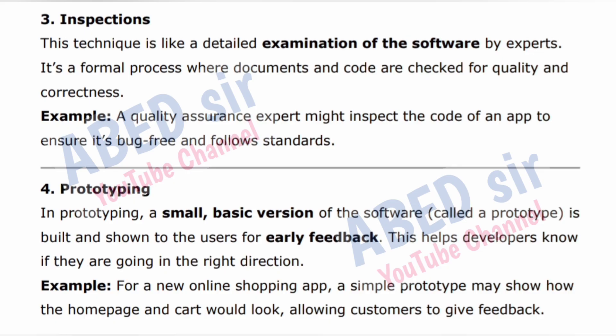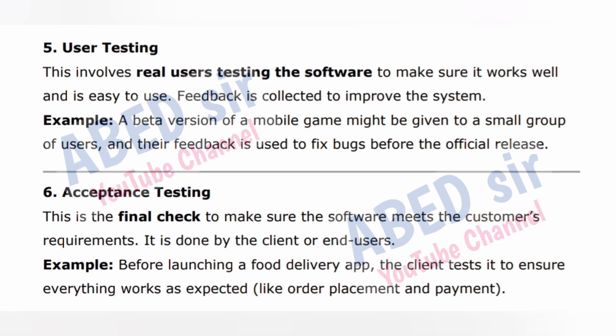Technique 4 — Prototyping: in prototyping, a small, basic version of the software called a prototype is built and shown to the users for early feedback. This helps developers know if they are going in the right direction. Example: for a new online shopping app, a simple prototype may show how the homepage and cart would look, allowing customers to give feedback. Technique 5 — User Testing: this involves real users testing the software to make sure it works well and is easy to use. Feedback is collected to improve the system. Example: a beta version of a mobile game might be given to a small group of users and their feedback is used to fix bugs before the official release.